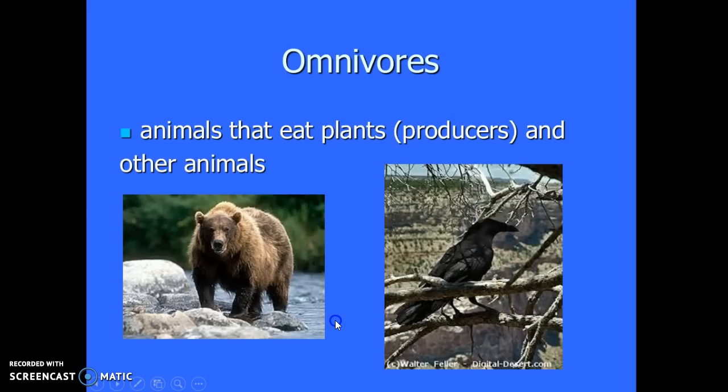Then you have organisms that eat both, and they have a special name: omnivores. Omnivores are animals that eat plants and other animals. Humans are considered omnivores, though humans can make choices — if a human chooses to eat just plants, they're called a vegetarian. In an ecosystem, omnivores are animals that eat both plants and animals. A bear likes to eat berries and honey, but will also go fishing in streams for fish. A lot of birds in Fargo will eat both worms and insects, but also seeds and berries.